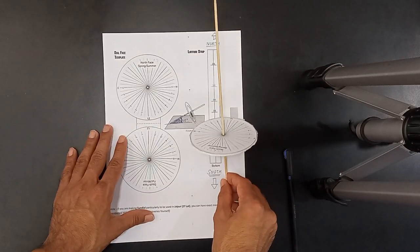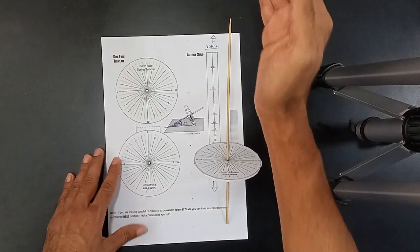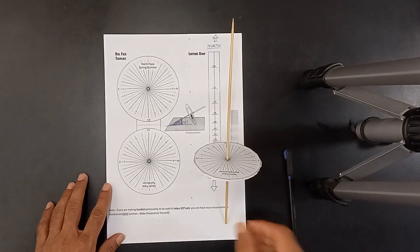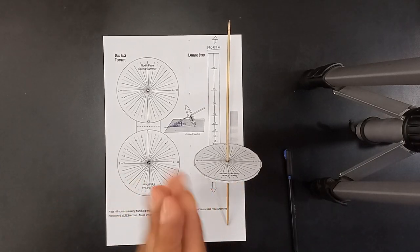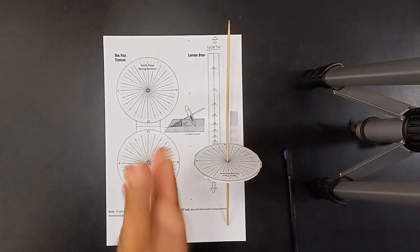This is your sundial ready to be used. Just put it in a way this stick points to north direction and follow the shadow. That's it. It's that simple. We really hope that you understood what we showed over here, the making and use of sundial.